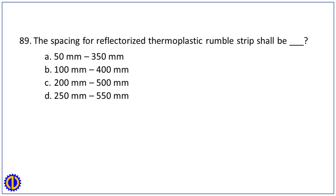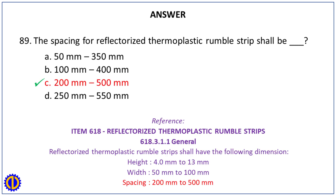Question 89. The spacing for reflectorized thermoplastic rumble strips shall be: A. 50 mm to 350 mm. B. 100 mm to 400 mm. C. 200 mm to 500 mm. D. 250 mm to 550 mm. Answer: C. 200 mm to 500 mm. Reference: Item 618, Reflectorized Thermoplastic Rumble Strips, 618.3.1.1 General — dimensions: Height 4.0 mm to 13 mm, Width 50 mm to 100 mm, Spacing 200 mm to 500 mm.